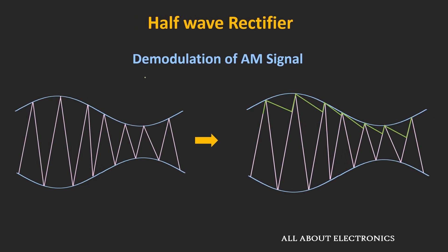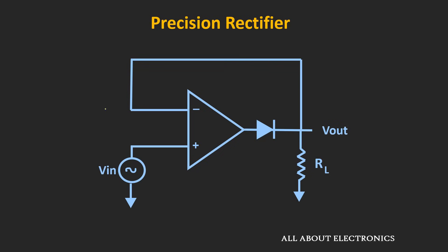For example, if you want to demodulate an AM signal, the received signal strength is usually much smaller than the diode voltage drop. So if you want to demodulate the envelope from the carrier signal, it is not possible with a normal rectifier circuit. In such cases, the precision rectifier circuit is very useful. This circuit is designed using an op-amp and diode, and the diode acts like an ideal diode — making the rectifier behave like an ideal rectifier. Because of this, the circuit is also known as the super diode.